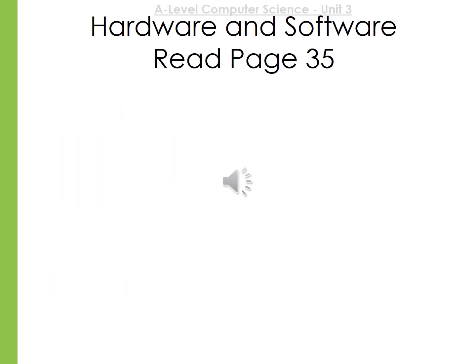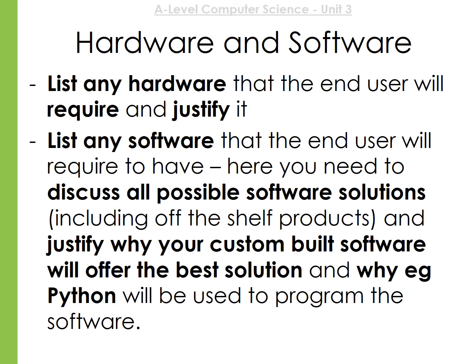The final section of your report should look at the hardware and software you need to complete this project. Make sure you've finished all sections so far before attempting this, then read page 35 of the book. You'll need to list any hardware the end user will need and justify why it's needed, and list any software required. You should also discuss all possible software solutions, including off-the-shelf products that you could buy, and then justify why your custom-built software is the best solution.